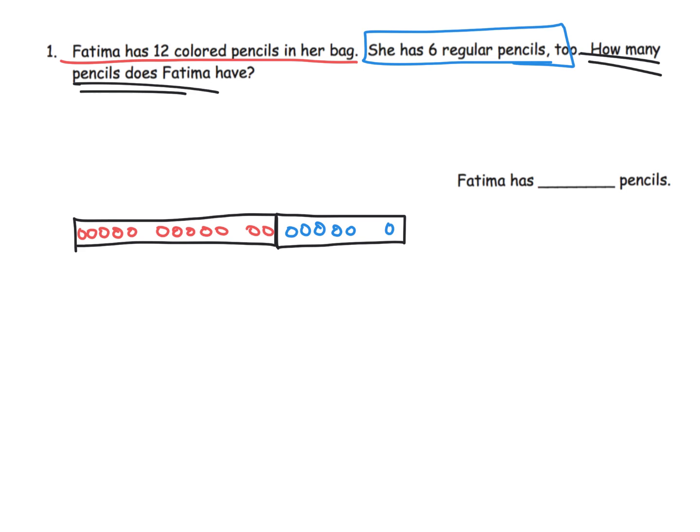So one thing I might do is I might say colored, and then I would say regular is our labels. I might also say here is 12, and here is 6. And then the last thing I would say is I would put the question mark here showing that we're trying to find the total. So keep in mind, this is not the only possible way the model could be drawn, but it's certainly one example.